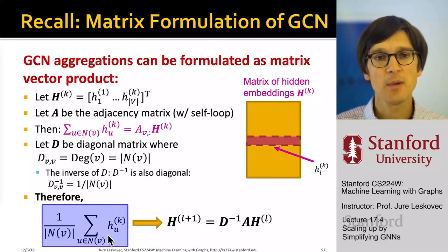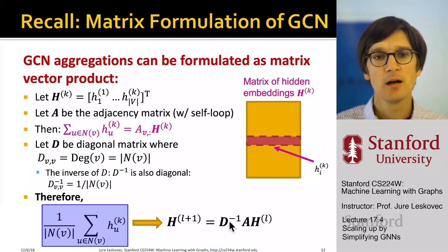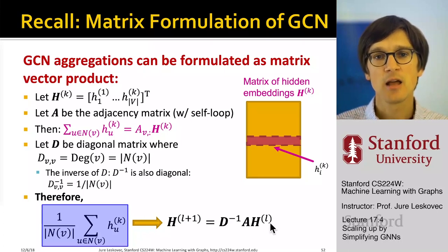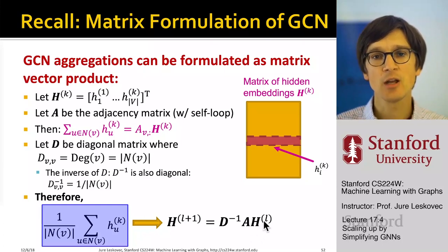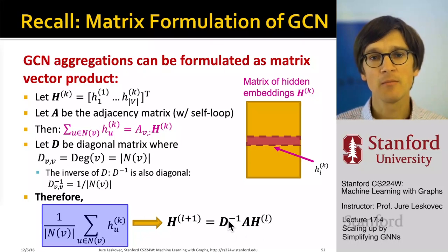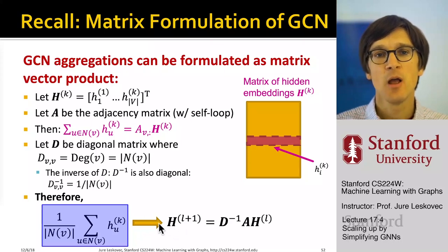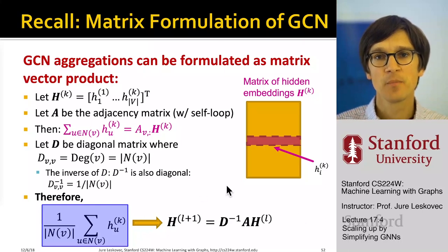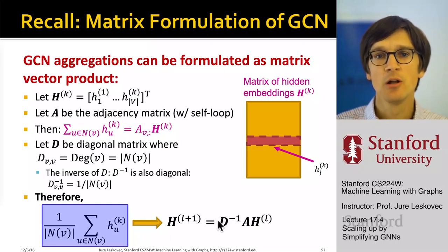The summation over the neighbors divided by the degree of that node is simply D inverse times the adjacency matrix A times the hidden embeddings matrix H. So given H at level L, if we multiply it by A and multiply it by D inverse, we get the matrix of node embeddings at level L+1. You can rewrite this iteration just as a product of three matrices. In the GCN, we also have a ReLU non-linearity and a transformation.